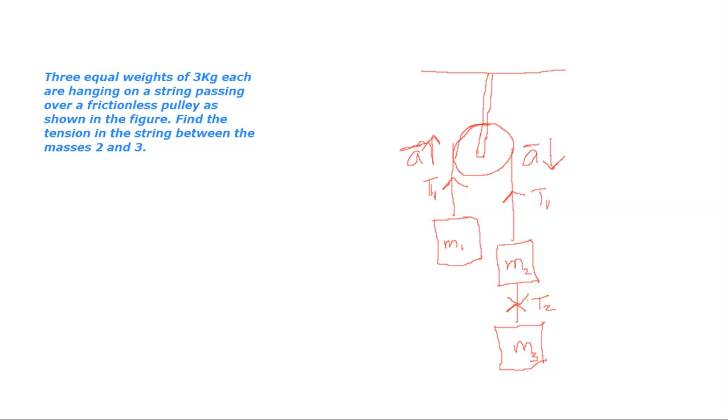Here, the tension T1 on this string in the side of M1—the equation of motion for the left hand side is T1 minus M1g, or Mg, is equal to MA. Since the masses are equal, we will just put M. So T1 minus Mg equals MA. That is the equation of motion for the left hand side.